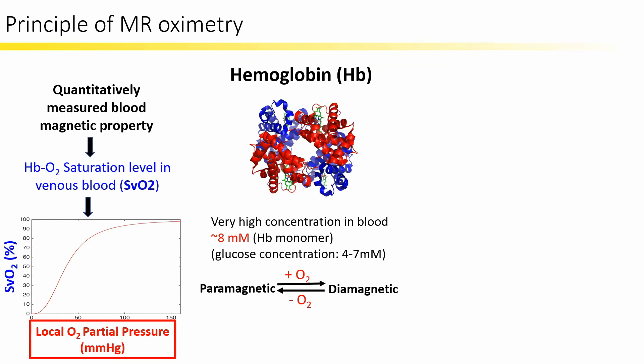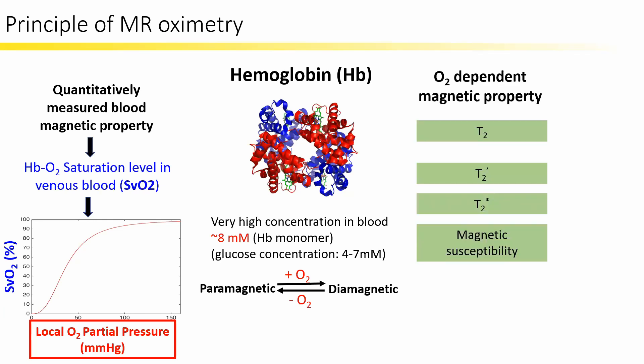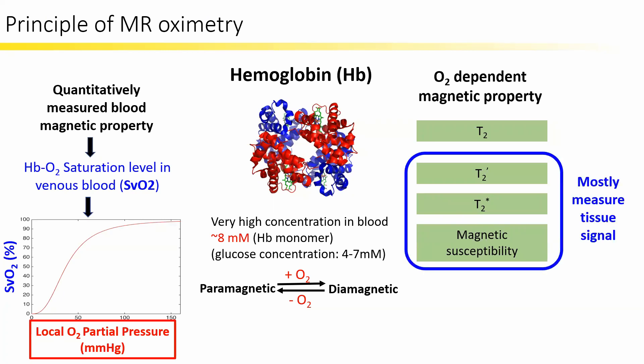The measurement of the magnetic property related to hemoglobin can reveal blood oxygenation, which determines the local oxygen content in brain tissue. There are four magnetic properties affected by oxygen binding of hemoglobin, but except blood T2, most of these properties are measured on the tissue signal.